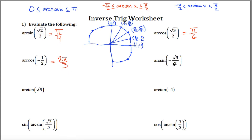Arc sine of negative root 3 over 2. So where's the y coordinate equal to negative root 3 over 2? That's right here, and over here. But I must be talking about this point because arc sine has to be between negative pi over 2 and pi over 2, so the measure of this angle right here is negative pi over 3.